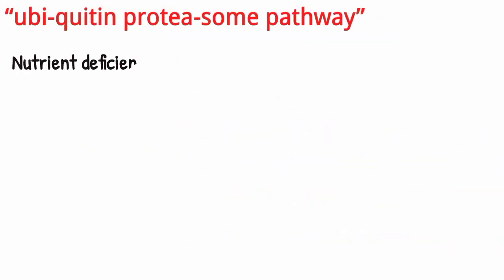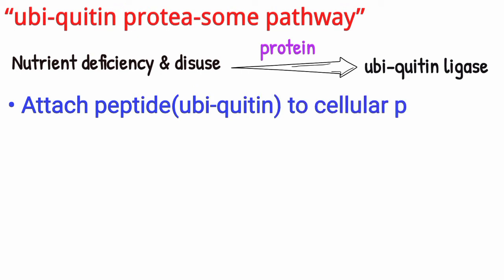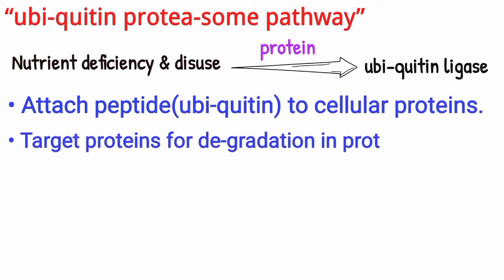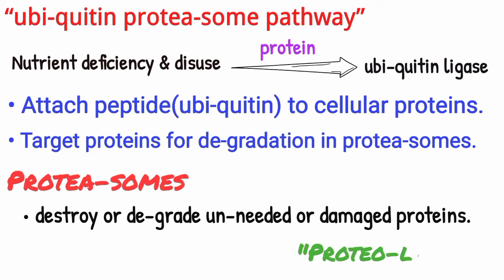Nutrient deficiency and disuse may activate protein ubiquitin ligase, which attach the small peptide ubiquitin to cellular proteins and target these proteins for degradation in proteasomes. Proteasomes basically destroy or degrade unneeded or damaged proteins by a process called proteolysis.